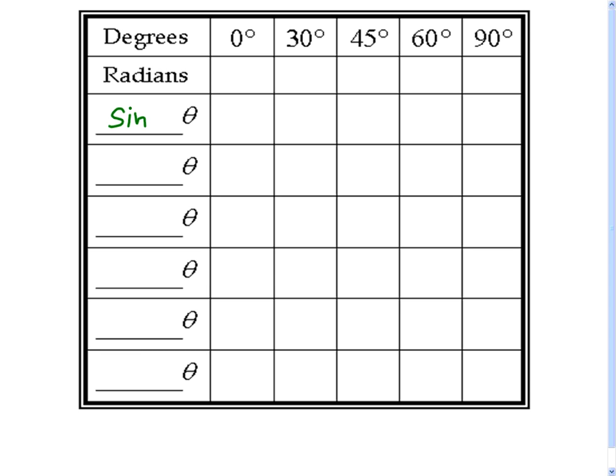I can immediately get the cosine values because sine and cosine are co-functions, and they work backwards from each other. Knowing sine and cosine, I can use the fundamental identity to get tangent. And because tangent and cotangent are co-functions, they will run backwards from each other.